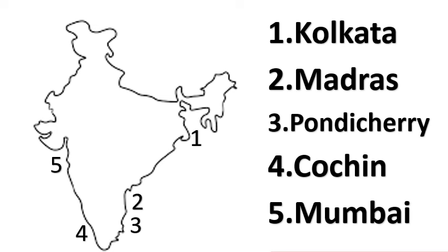Dear students, here is a map with the location of places. Number 1: Kolkata — see the red dot. Number 2: Madras. Number 3: Pondicherry. Number 4: Cochin. Number 5: Mumbai.